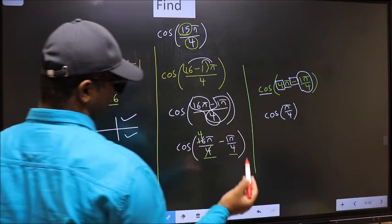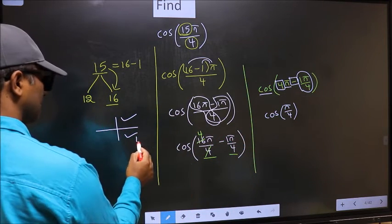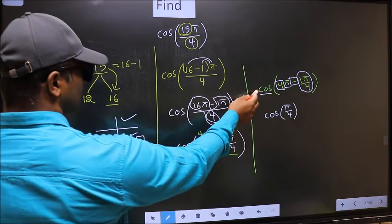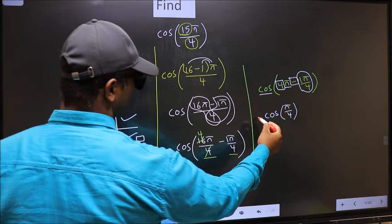Here we have negative. That means the angle lies in the fourth quadrant. In the fourth quadrant, cos is positive. So you should put plus.